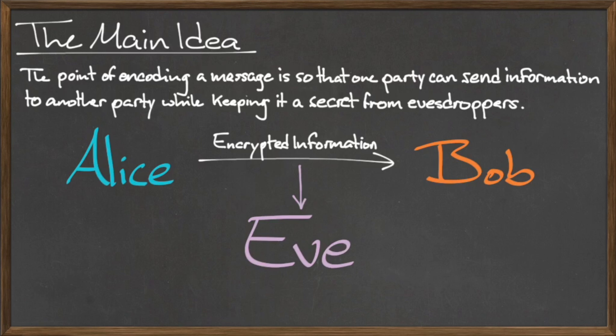To avoid having her message intercepted, Alice can instead send Bob an encrypted message, which only Bob can open. The advantage of sending an encrypted message is that even if the eavesdropper Eve is able to intercept the encrypted message, she cannot do anything with this information.